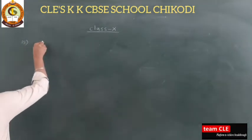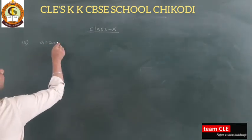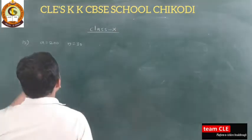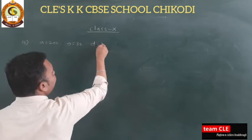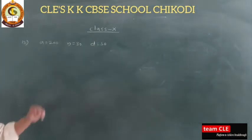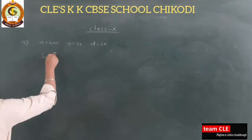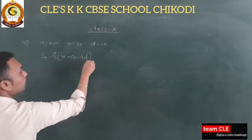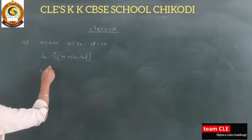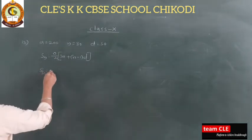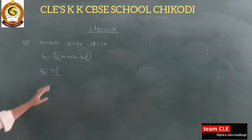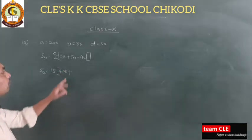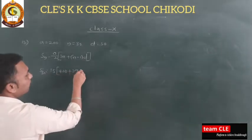For question 15: the first day penalty a = ₹200, n = 30 days, common difference d = ₹50. Using the formula Sₙ = n/2 × [2a + (n−1)d]: S₃₀ = 30/2 × [2×200 + (30−1)×50] = 15 × [400 + 29×50].